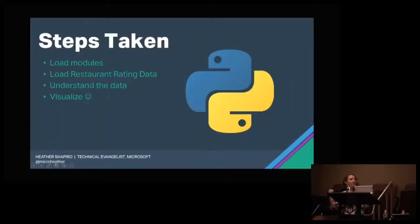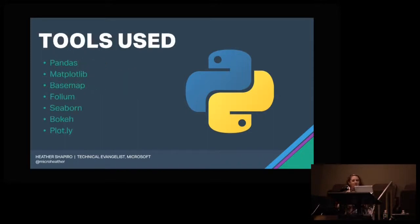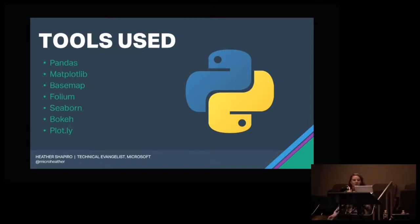In Python, the steps we need to take are: load the modules, load the restaurant rating data, figure out how to understand the data, and then visualize it. Some of the tools I'm using — these aren't all the visualization tools, just ones I wanted to test out. We have pandas, matplotlib, basemap, folium, seaborn, bokeh, and plotly.